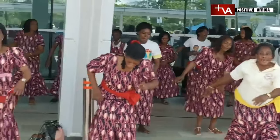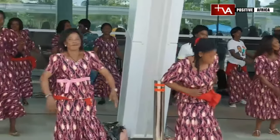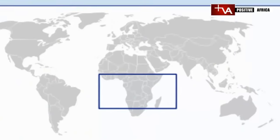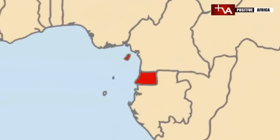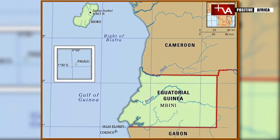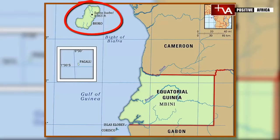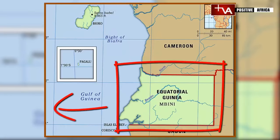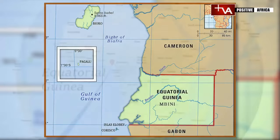As of 2021, the country has a population of over 1.4 million inhabitants. Equatorial Guinea consists of two parts: an insular and a mainland region. The insular region consists of the islands of Bioko, formerly Fernando Po, in the Gulf of Guinea, and Annobón, a small volcanic island that is the only part of the country south of the equator.